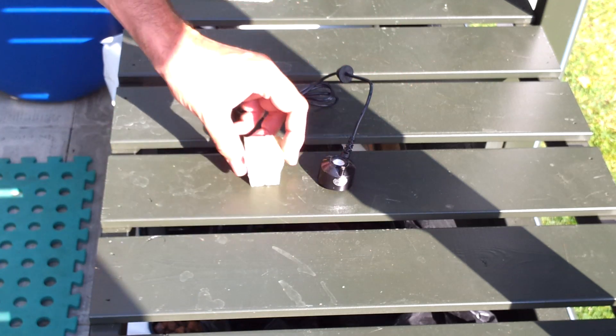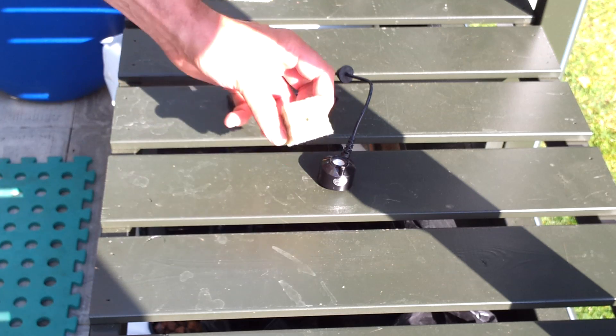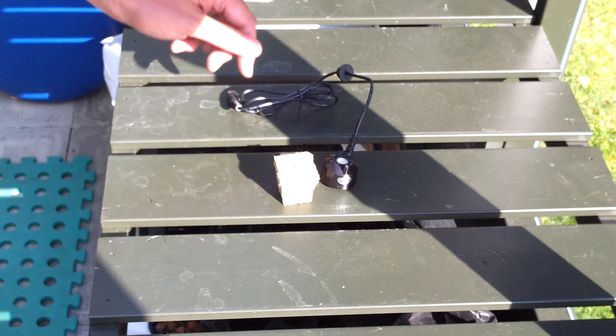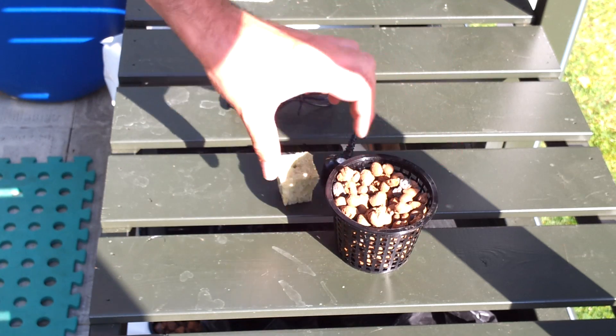I'd been starting my seedlings off in these little rock wall cubes, and after a couple of weeks in these kind of cubes, the roots were down to the bottom of the cubes and they were bound and I needed to move them into the net pots.